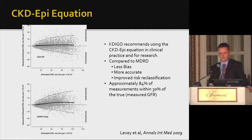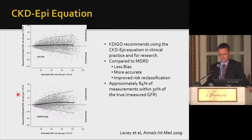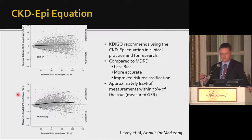More recently, the CKD-EPI equation was developed here in Boston using a more diverse patient group. The MDRD equation had a systematic bias, particularly at higher GFR levels, so KDIGO recommends using the CKD-EPI equation for creatinine-based GFR estimation. Compared to MDRD, it is less biased, more accurate, and has improved risk reclassification — meaning patients placed in a particular CKD category are more likely to be correctly classified.